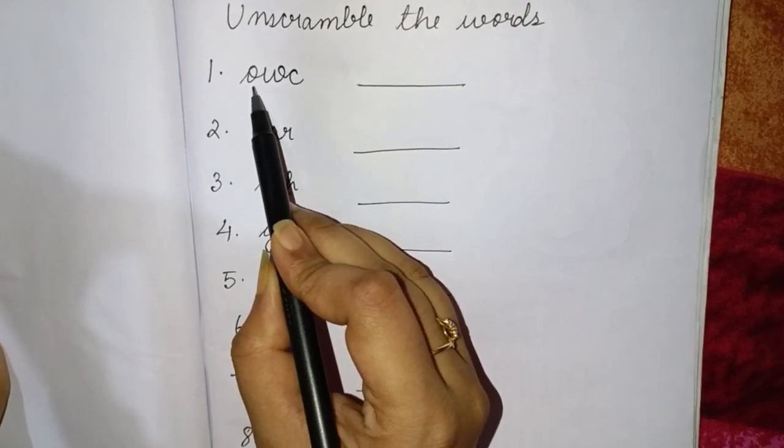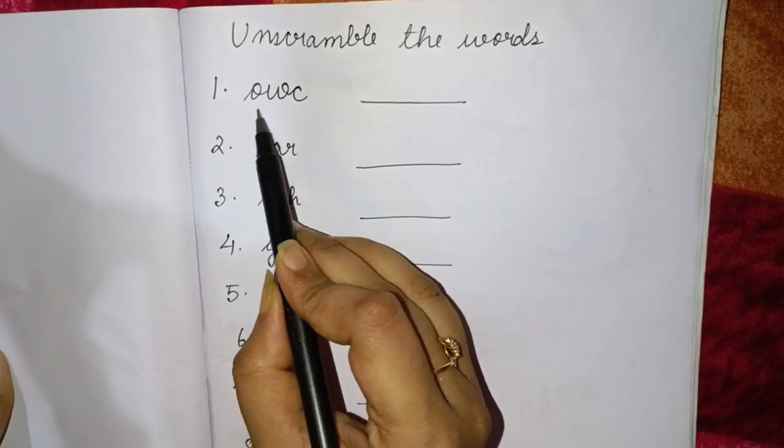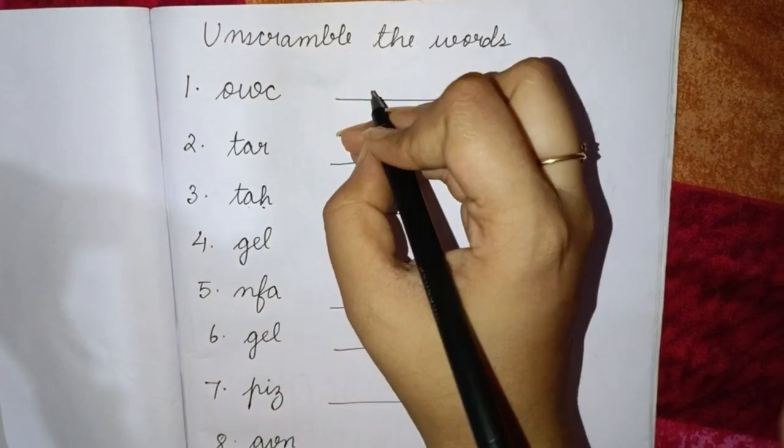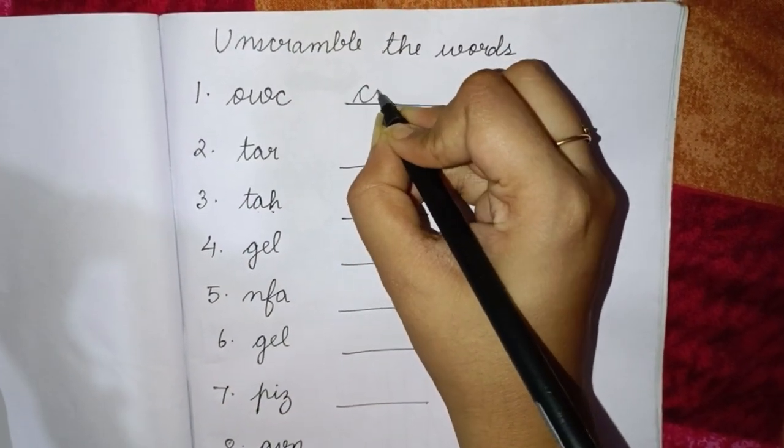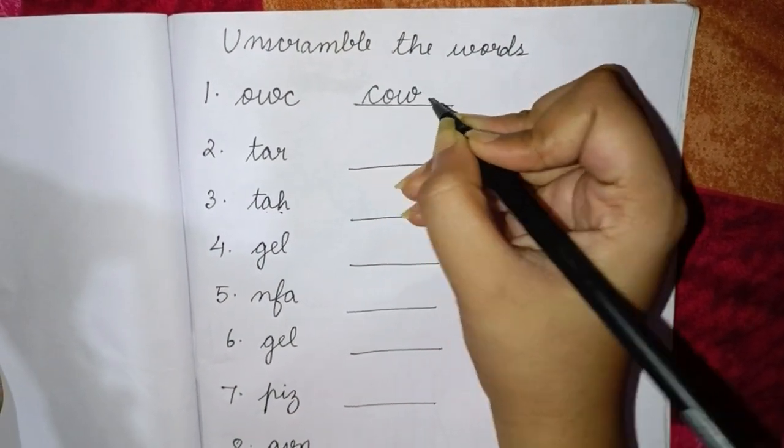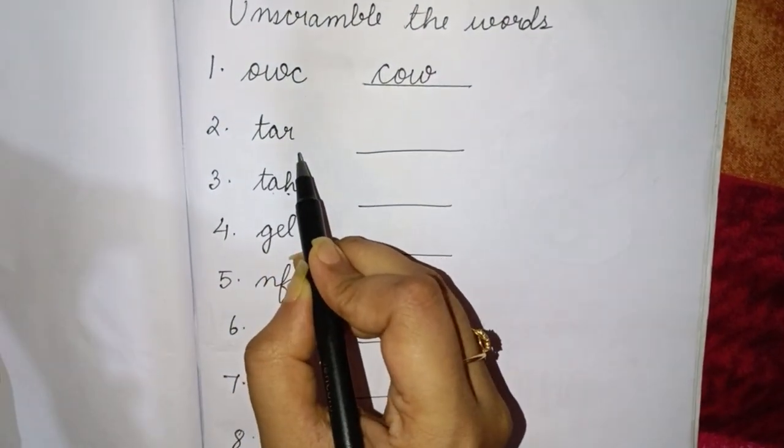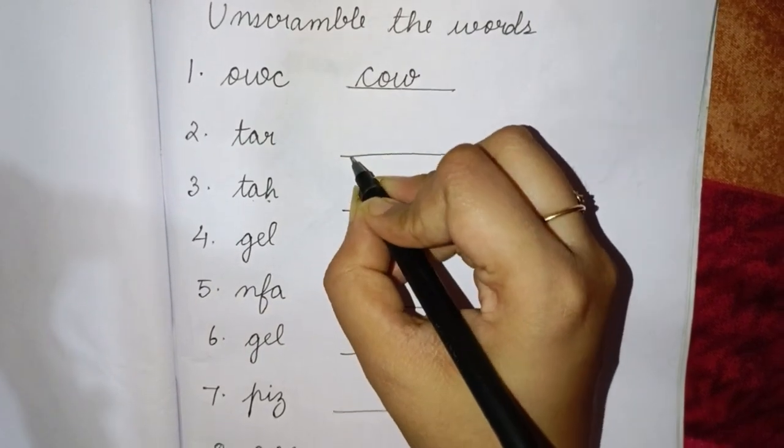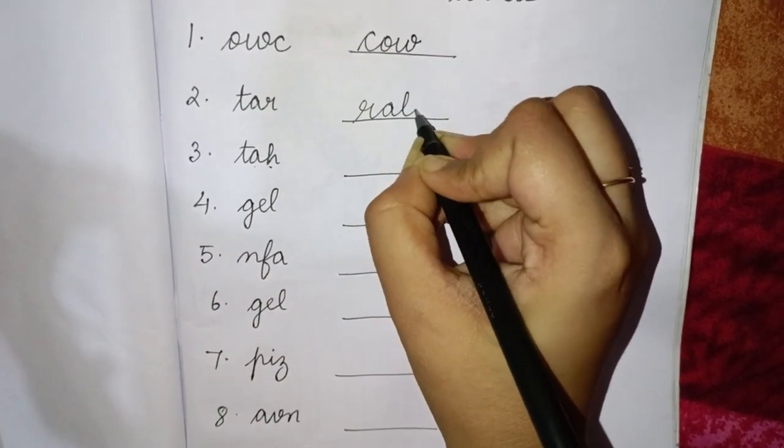The first one here is O W C. This is wrong word. You have to write the correct word. So the correct word will be C O W cow. Next is T A R. This is also a wrong word. The correct word will be R A T rat.